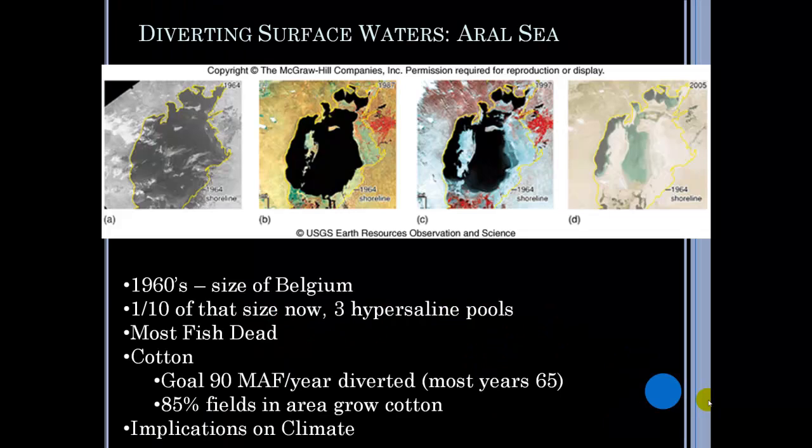I want to begin by talking about the Aral Sea. The Aral Sea is an excellent case study when discussing water issues because it really represents what can go wrong when water is diverted. The Aral Sea is a body of water fed by waters coming off the Himalaya Mountains. The rivers that feed into the Aral Sea are what are known as exotic streams — fed in their headwaters by areas with a very different climatic and precipitation regime than the lands they flow through.